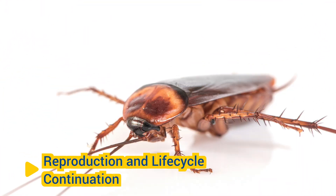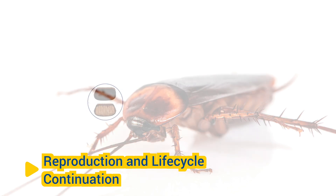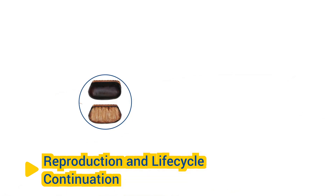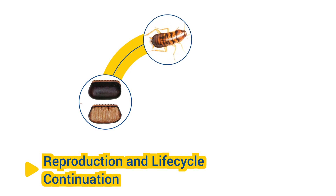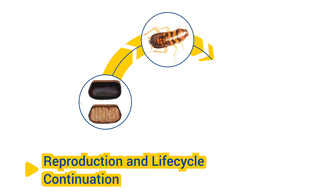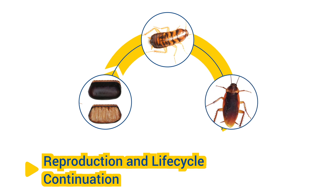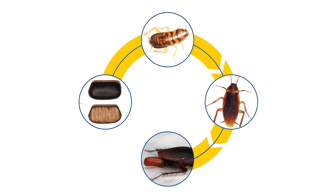Reproduction and Life Cycle Continuation. Adult cockroaches reproduce throughout their adult lives, laying multiple batches of eggs and perpetuating the life cycle. The cycle repeats as the eggs hatch into nymphs, which undergo molting and development to become adults, continuing the cycle of reproduction and population growth.